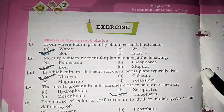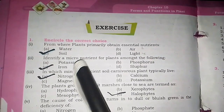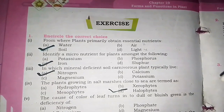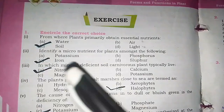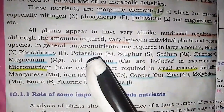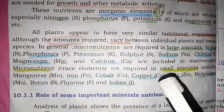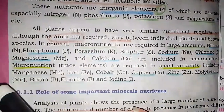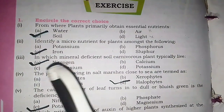MCQ number 2: Identify the micronutrients for plants among the following. There is a table showing macro and micronutrients. Potassium, sulfur, phosphorus, nitrogen, calcium, magnesium, and sodium are macronutrients. Iron, zinc, cobalt, copper, manganese, boron, fluorine, and iodine are micronutrients. The correct option is C.